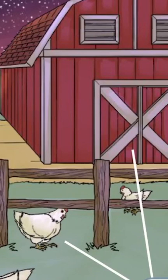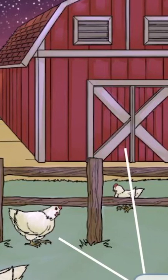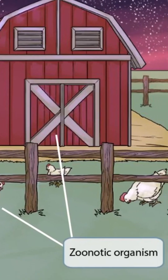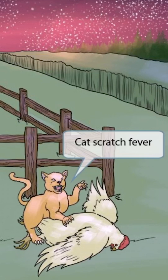Bartonella is a zoonotic organism, meaning that it's an infectious disease transmitted between animals and humans. The fact that this entire scene is on a farm and has a bunch of hens should help you remember that Bartonella is a zoonotic organism.